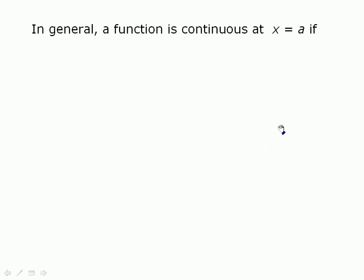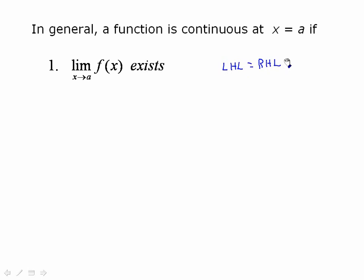In general, a function is continuous at x = a if three conditions are met. Number one: the limit exists, meaning the left-hand limit equals the right-hand limit as we approach that point. Number two: the value f(a) must exist and be defined. Number three: the limit must equal f(a). When we go through an example, you'll know exactly what I'm talking about.